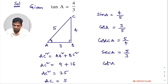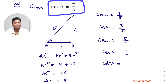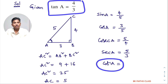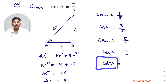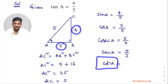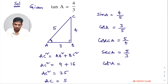Cot A is the reciprocal of tan A. Tan A is given as 4 by 3, so cot A is 3 by 4. Or using the definition, cot A is adjacent side by opposite side — adjacent side is 3, opposite side is 4 — so cot A equals 3 by 4.